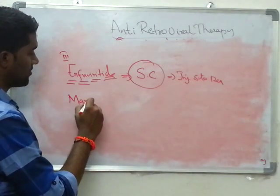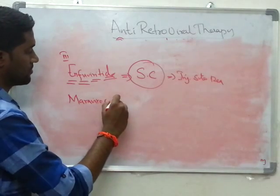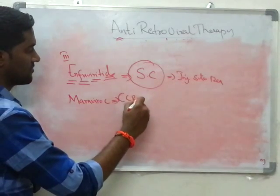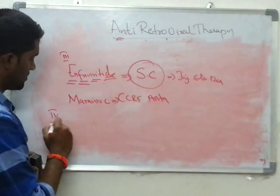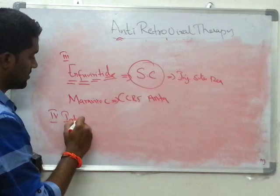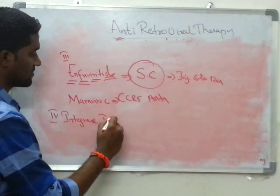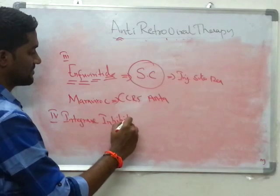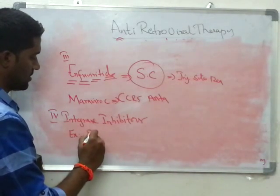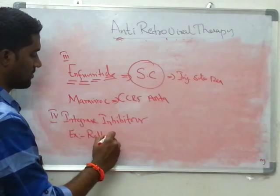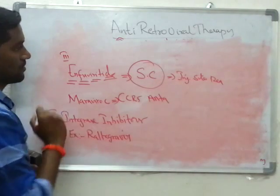Maraviroc is a CCR5 antagonist. The fourth class is integrase inhibitors, with Raltegravir as the example drug.